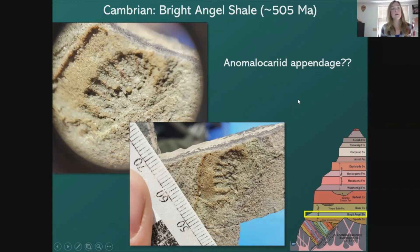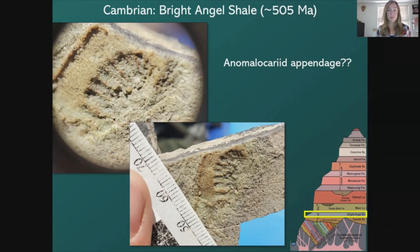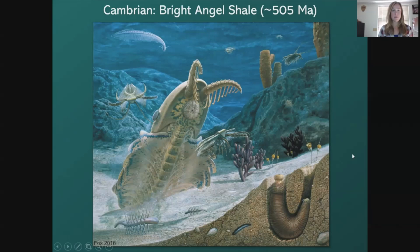Just this summer, our research group found a specimen in the Bright Angel Shale that we think could be some type of Anomalocaris appendage — a smaller one, but it potentially adds to the evidence that Anomalocaris was present during deposition of the Bright Angel Shale. We have yet to fully study and identify it, and it may not turn out to be Anomalocaris, but that's where we're leaning. This is what Anomalocaris might have looked like in the Cambrian oceans — pretty big compared to other creatures, with large appendages to catch prey. Very ferocious — one might call it the dinosaur of the Cambrian.